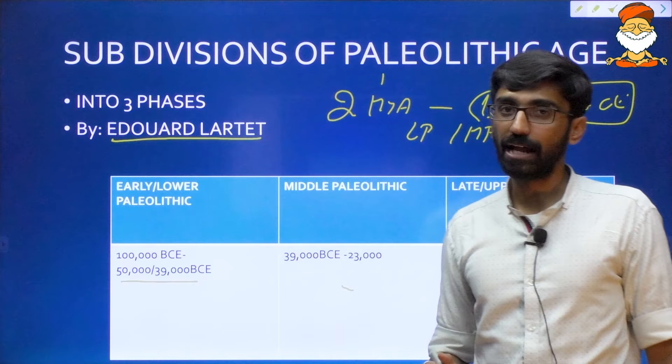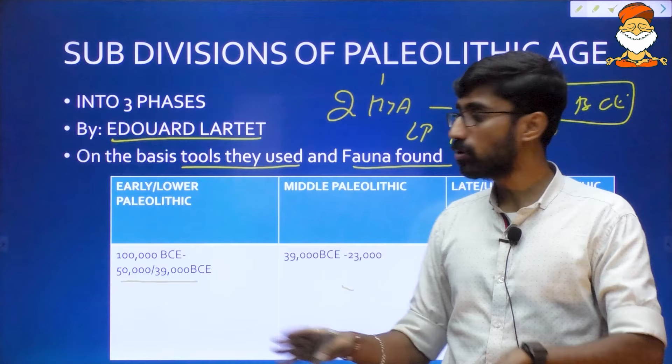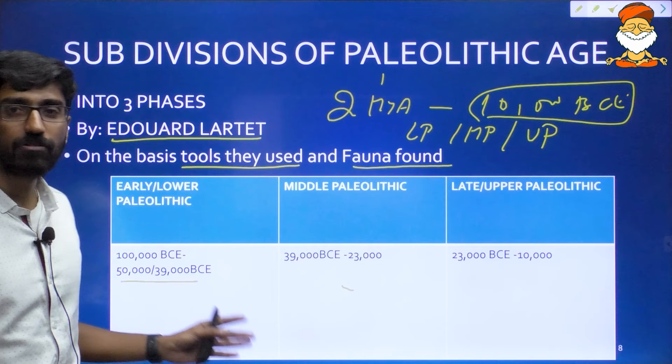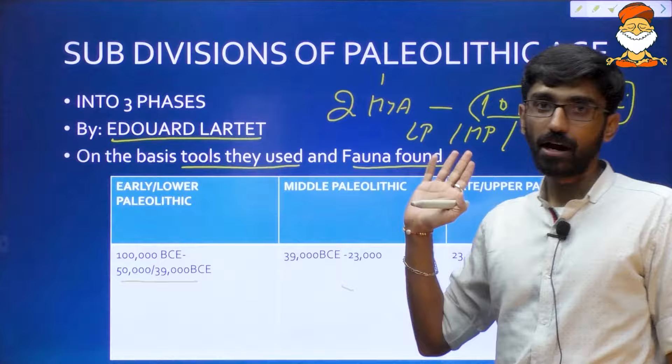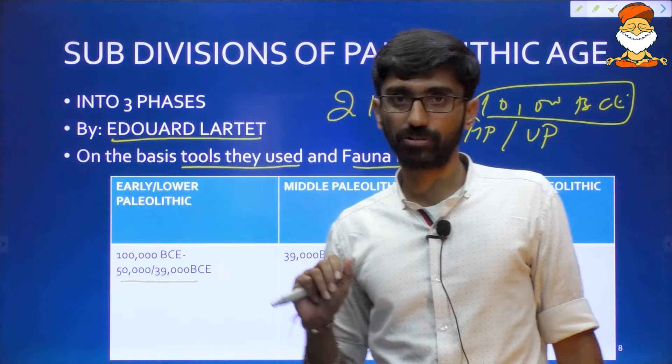Within Paleolithic, the classification into Lower, Middle, and Upper is based on different tools used, as well as the fauna — different animals found in each time period. Within Paleolithic, Lower Paleolithic tools are different, Middle Paleolithic tools are different, and Upper Paleolithic tools are different. We are going to see images to understand this concept. Don't worry too much about the exact time periods — a rough idea will help you answer questions.